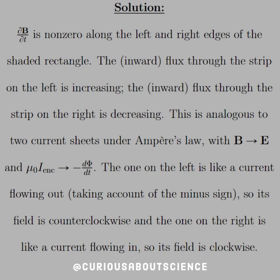This is analogous to the two current sheets under Ampere's law, with B going to E and the enclosed current going to the negative time derivative of flux. The one on the left is like a current flowing out — taking into account the minus sign — so its field is counterclockwise, and the one on the right is like a current flowing in, so the field is clockwise.